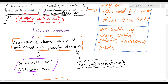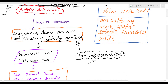The deconjugation of primary bile acids occurs in the small intestine, followed by formation of secondary bile acids, and this is carried out by gut microorganisms. There are only two secondary bile acids: deoxycholic acid and lithocholic acid. This is another important exam question — what are the secondary bile acids?